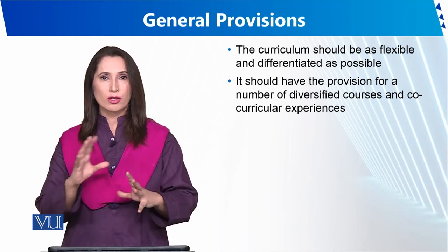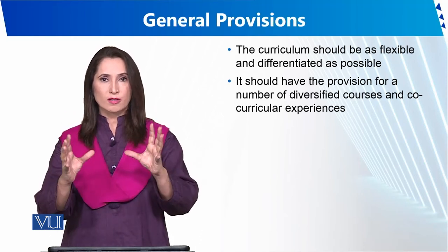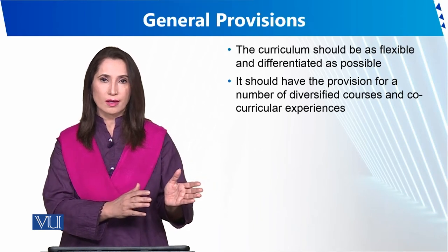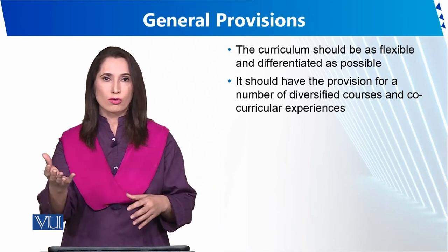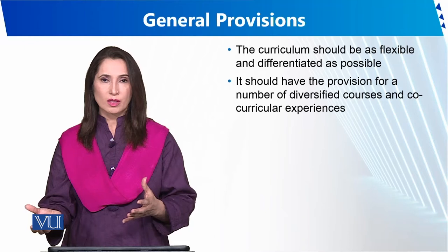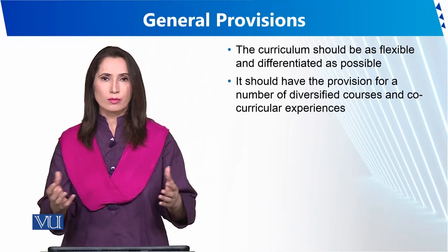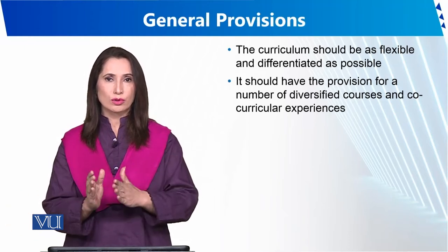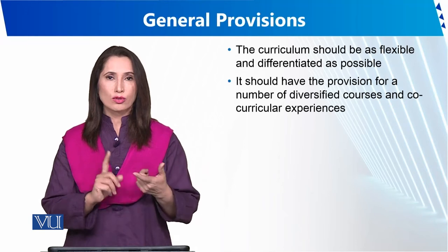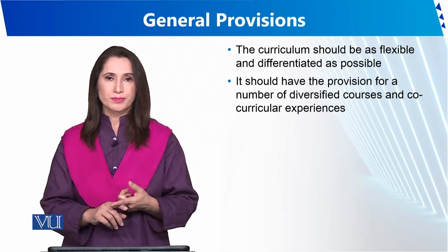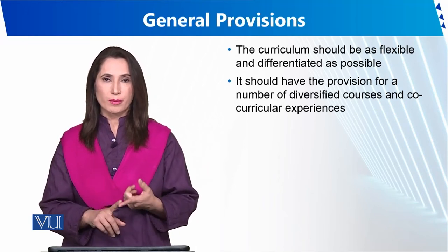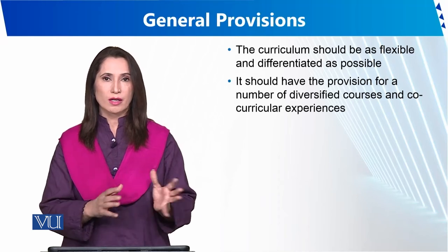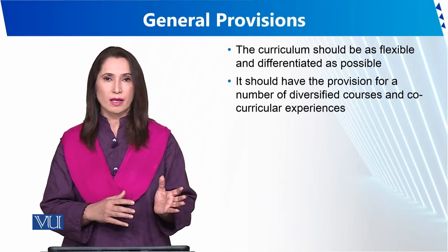Difficult topics can be explained briefly and then assignments or projects divided among groups. Easier concepts can be given to students as assignments. Flexible curriculum means dividing it into 3–4 parts: some assignments, some projects. If it's a semester system, divide before mid-term; if it's an annual system, divide into 3–4 terms accordingly.